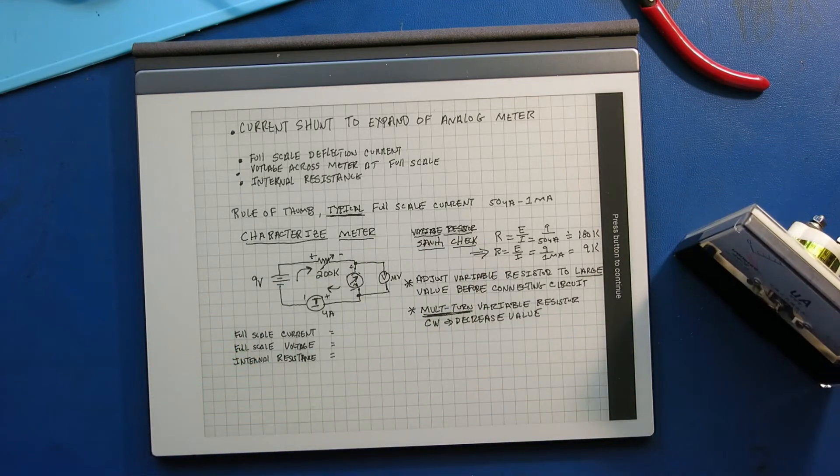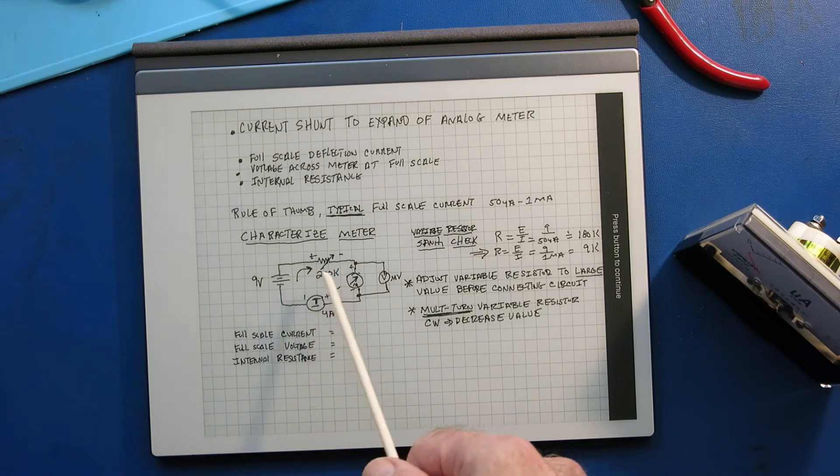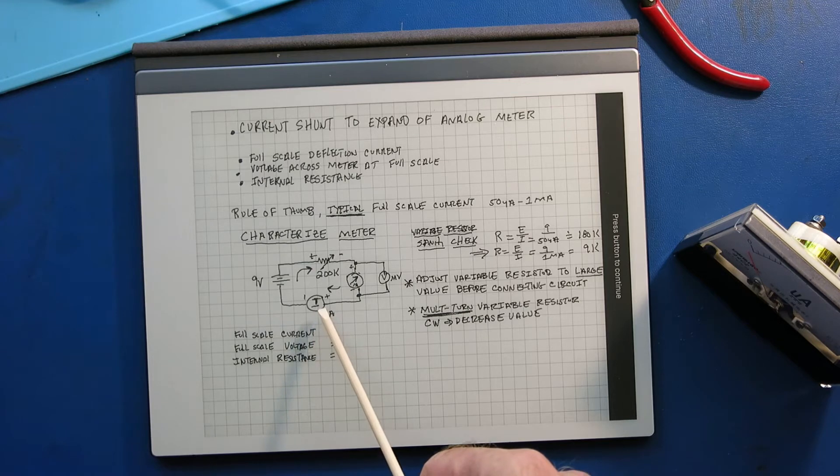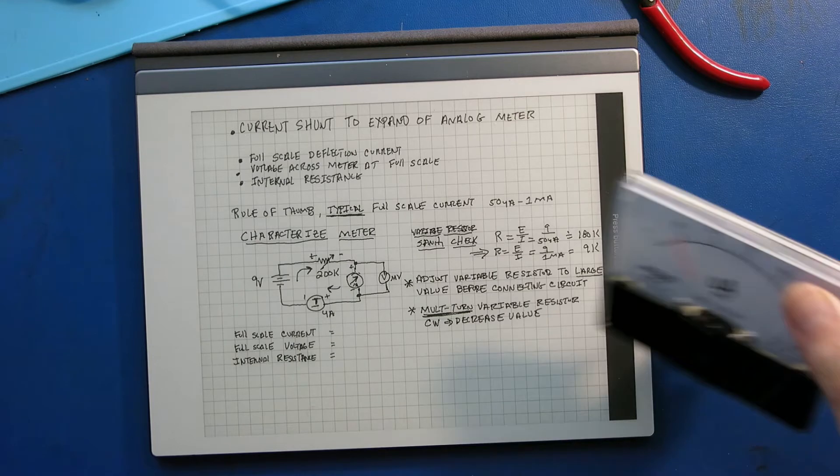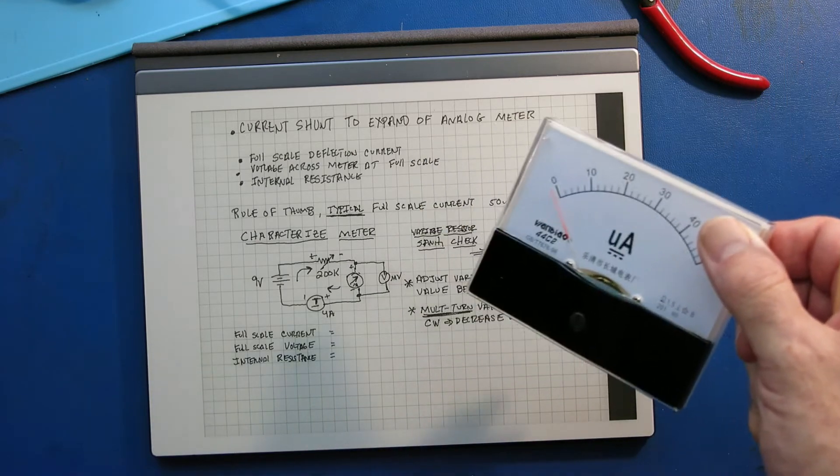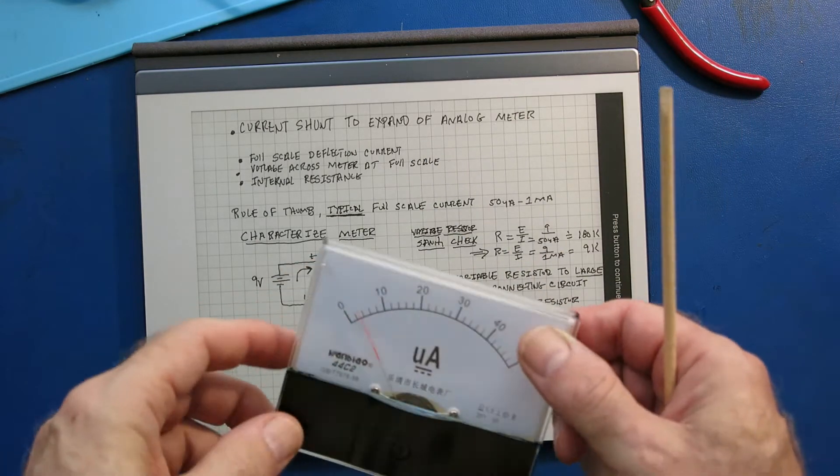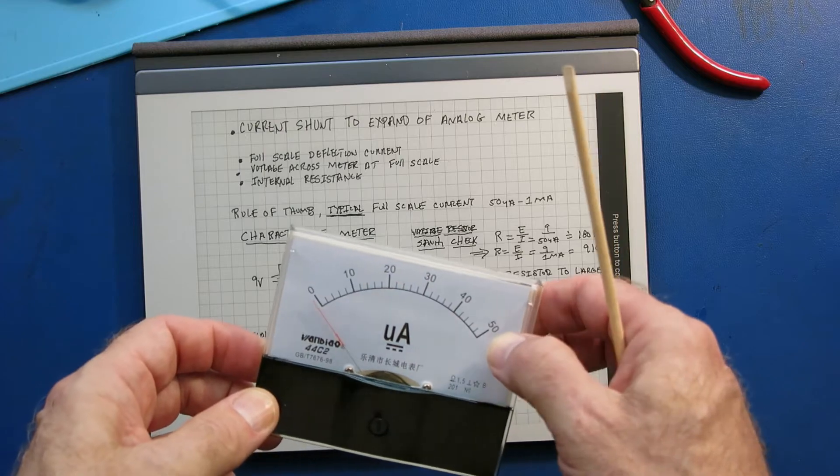And the way I'm going to do that is to use a power supply with a variable resistor and then we'll monitor the current in that circuit when it reaches full-scale, and then we'll measure the voltage across the meter. And we'll use those values to calculate the current shunt for 250 milliamps.